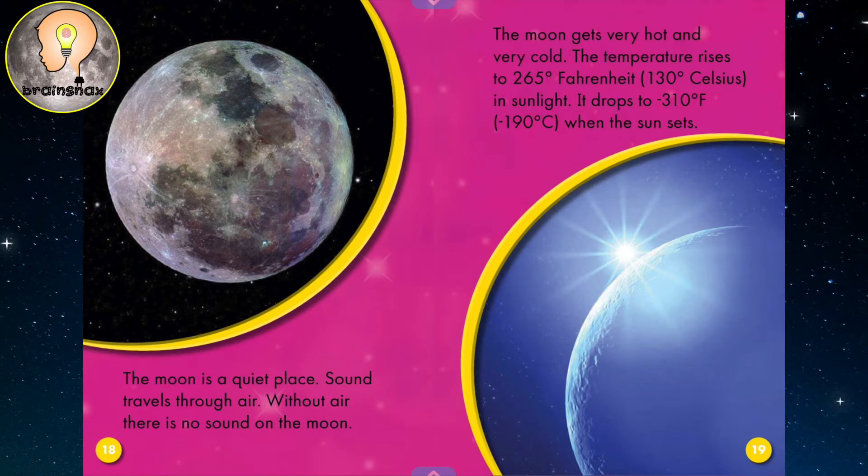The moon gets very hot and very cold. The temperature rises to 265 degrees Fahrenheit or 130 degrees Celsius in the sunlight, and it drops to minus 310 degrees Fahrenheit or minus 190 degrees Celsius when the sun sets. Wow, that can get very hot and very cold.